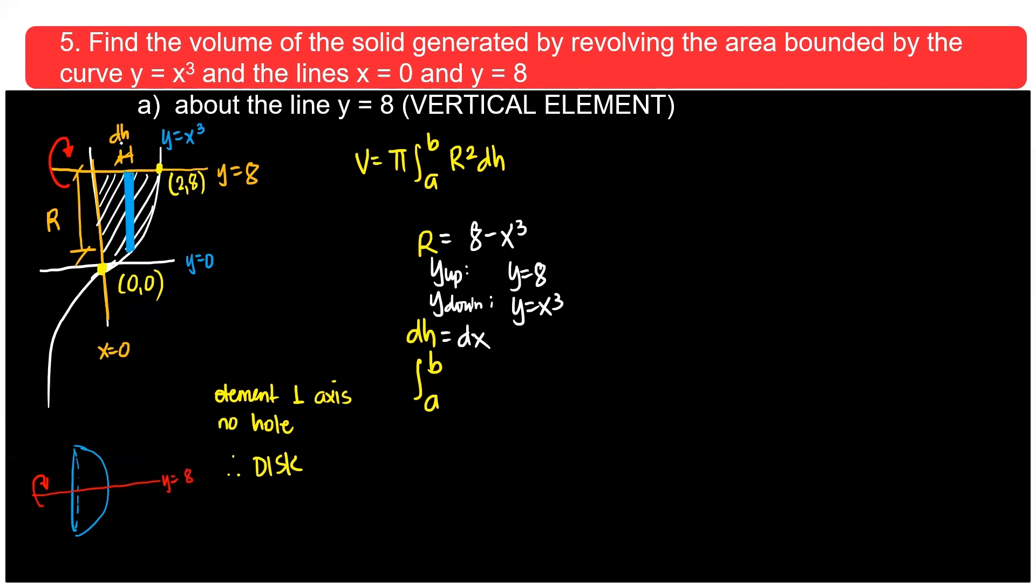And then dh is a dx. There, dh is dx. Therefore, I would look at the x values from 0 up to 2. Therefore, for the formula that I have is π from 0 to 2, 8 minus x cubed squared dx. So in here, we have to expand.